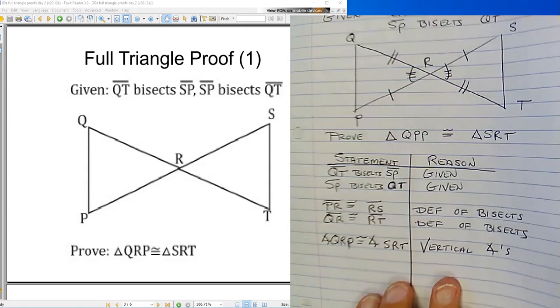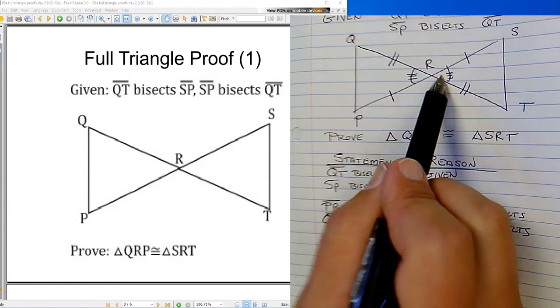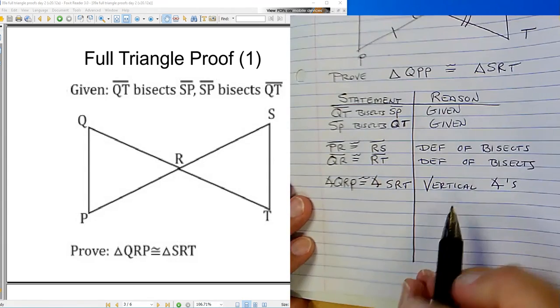And now I think we're ready to prove the two triangles are congruent. Side, angle, side. Side, angle, side. So the two triangles are congruent.